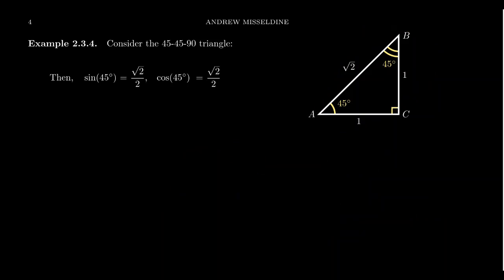And so that then justifies the picture we have right here. Every isosceles right triangle will be proportional to this one right here, thus giving us these very simple trigonometric ratios.